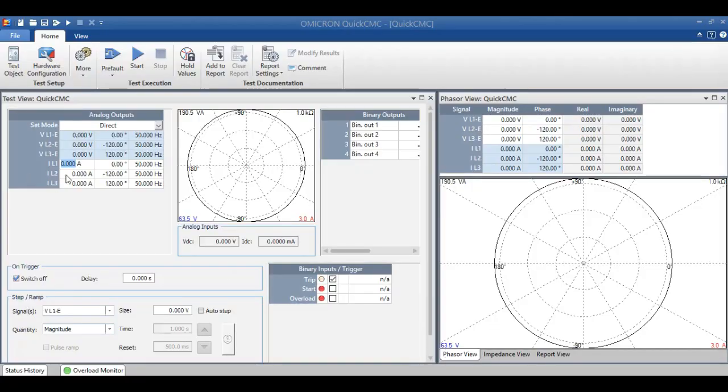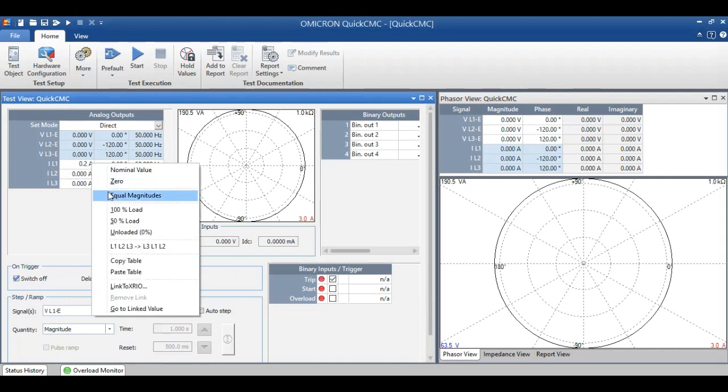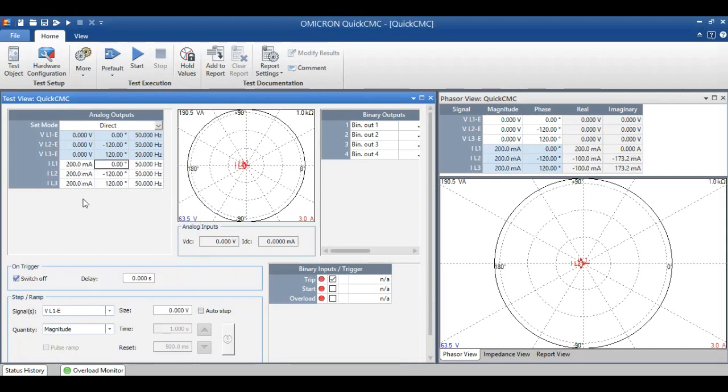For testing we have to inject 0.2 amps on all phase but we have to swap R and Y phase due to simulation of this negative phase sequence current.